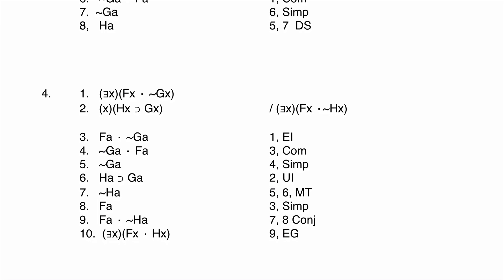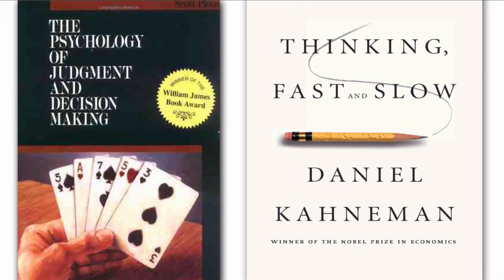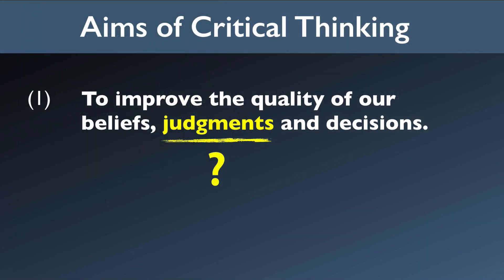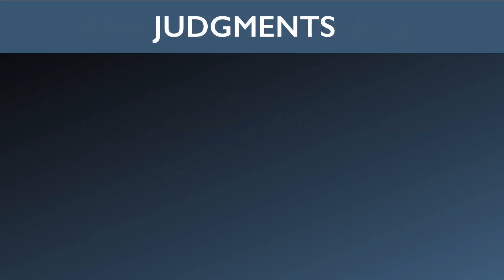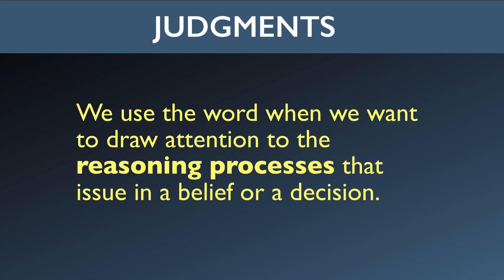On the other hand, what psychologists have learned over the past 40 years about how people actually make decisions is extremely important for helping us make better decisions — I'll come back to this a bit later. Now what about the term in the middle? What's a judgment? We use the word when we want to draw attention to the reasoning processes that issue in a belief or decision.